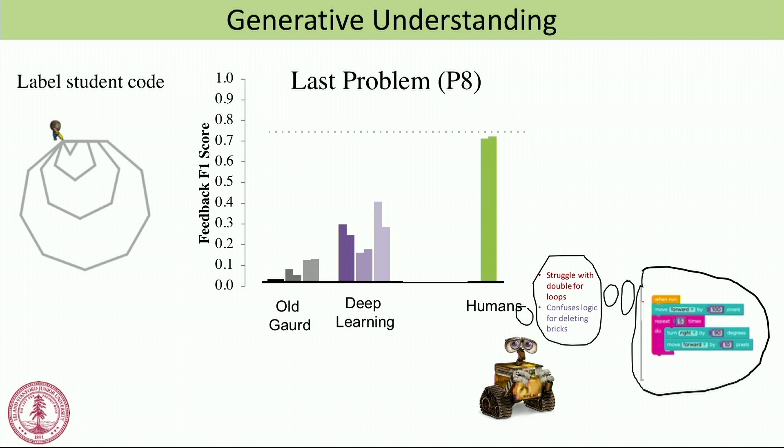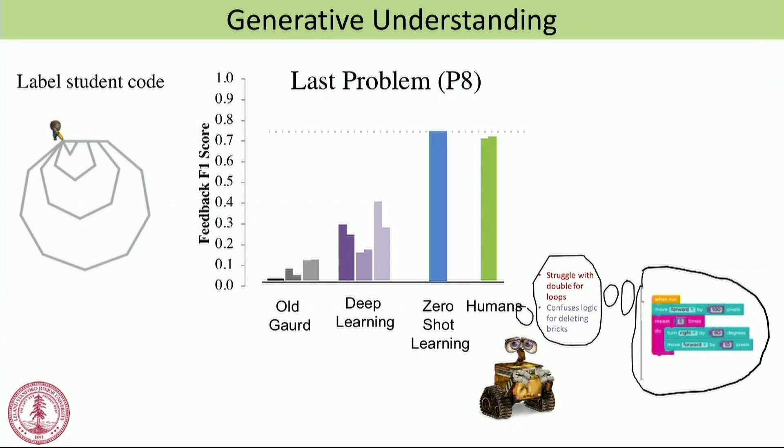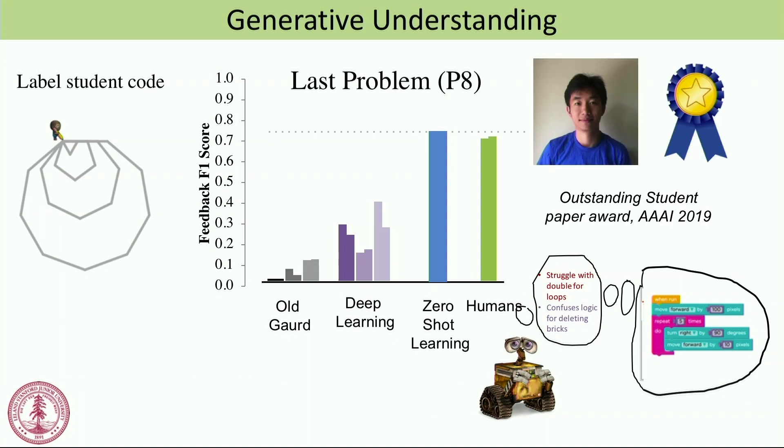We took that inspiration. We translated it back into the world of education—of course that took us a lot of effort—but once we accurately translated back to the world of education, we figured we were onto something. One of the reasons we knew we were onto something is for the first time we could get on par with humans at giving feedback to open-ended tasks. It was really exciting for lots of other reasons. We didn't need that much data, and we could explain why we were giving feedback. The algorithm could recognize also when it didn't know how to give feedback. Of course, one of the students got an award, so that was nice for him too.